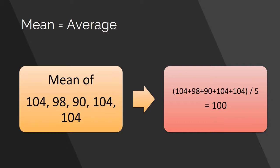If I ask you to find out the mean of that, it's very simple. What you do is you add all these numbers — 104 plus 98 plus 90 plus 104 plus 104 — and then divide by the number of items, which in this case is 5. Once you add these and divide by 5, this will give you 100. So that is the mean.